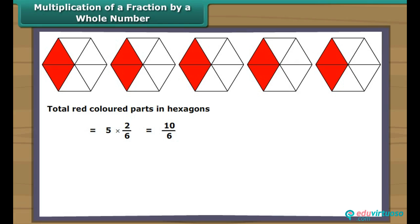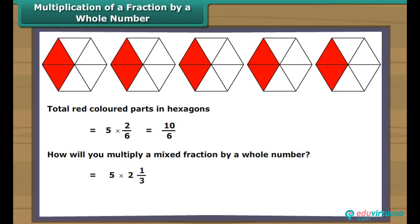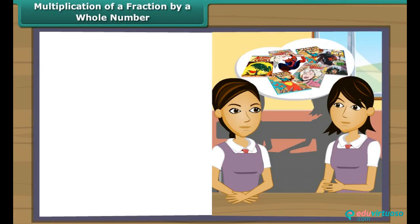To multiply a mixed fraction by a whole number, we first convert the mixed fraction to an improper fraction and then carry out the multiplication.